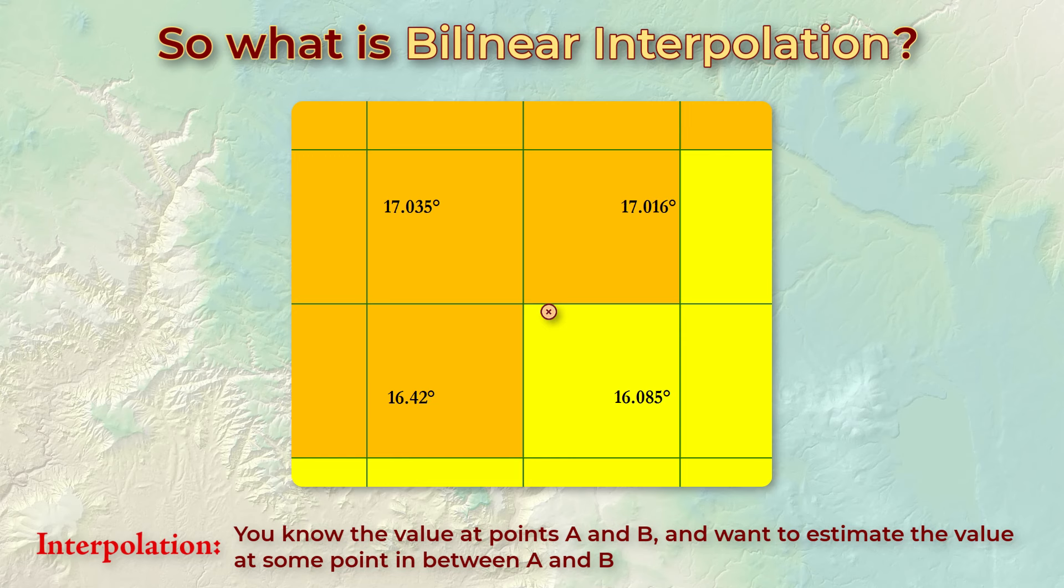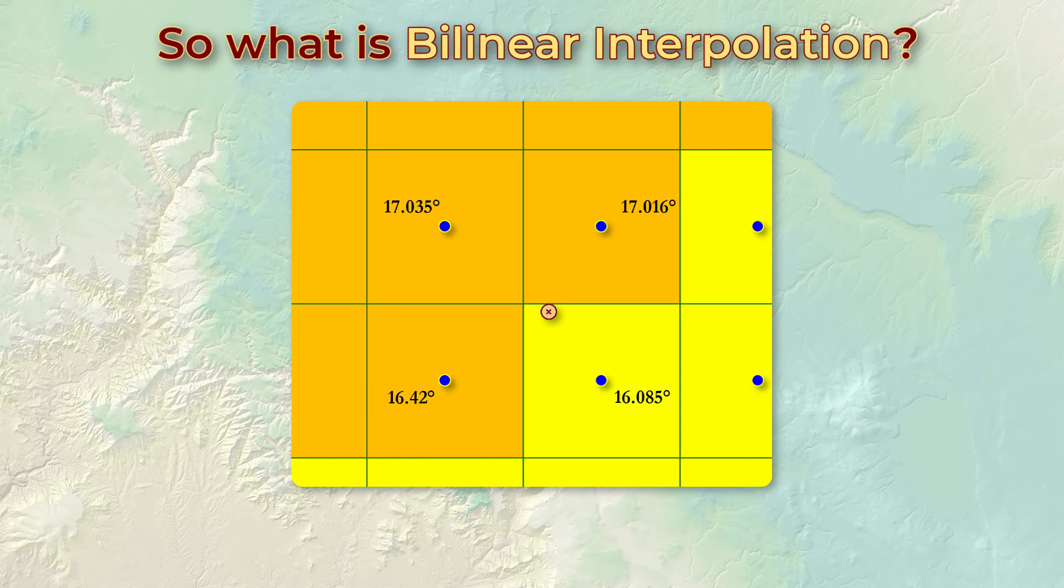In this scenario, we start by identifying these cell centers of each cell, and we assume that the slope values of these cell centers are the slope values of the cells. Now, let's draw two lines connecting the cell centers of the two southern cells with the cells just north of them.